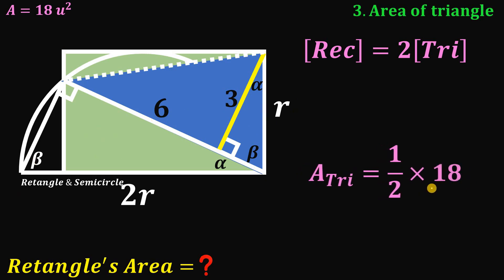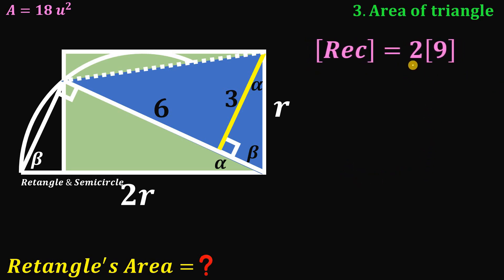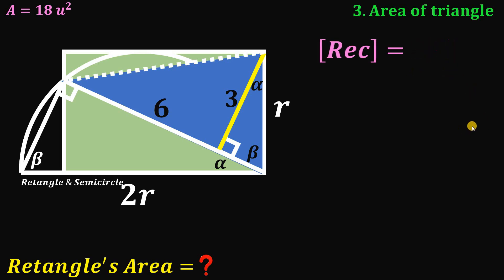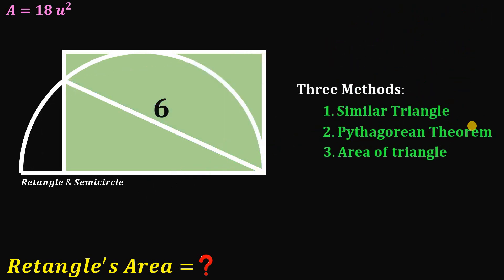One half of 18 equals 9, so the area of this triangle is 9 square units. Since the area of the rectangle is twice the area of the triangle, the area of the rectangle is 2 times 9, which is 18 square units.